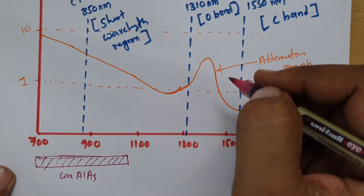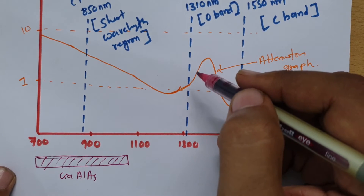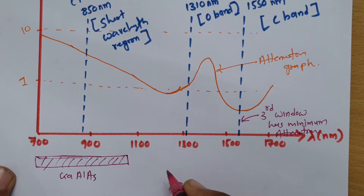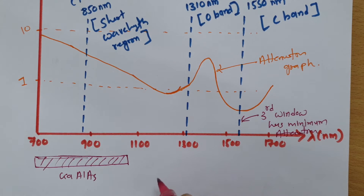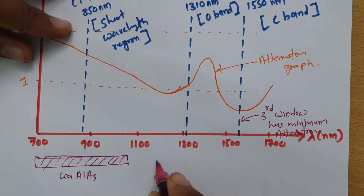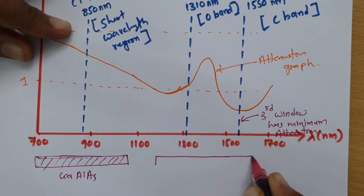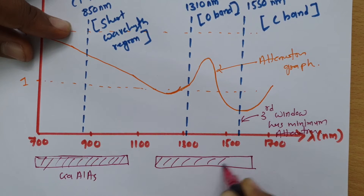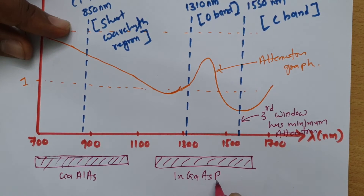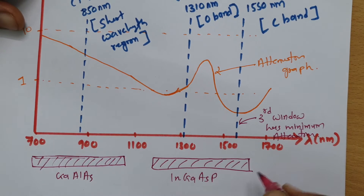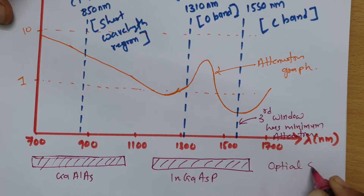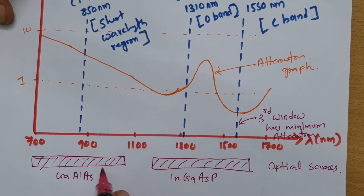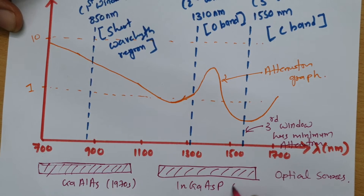There was then a revolution in optical sources and detectors. People moved to indium gallium arsenide phosphide (InGaAsP), which works in the range of 1260 to 1675 nanometers. This material was utilized in the 1980s, replacing the earlier GaAlAs sources used in the 1970s.